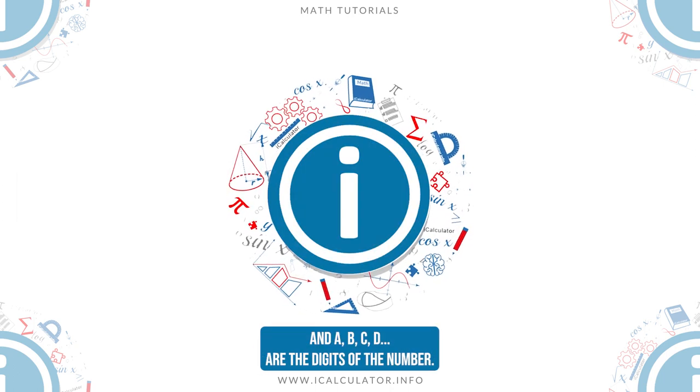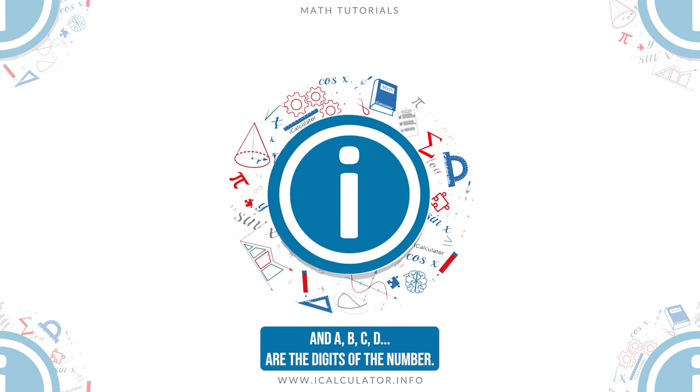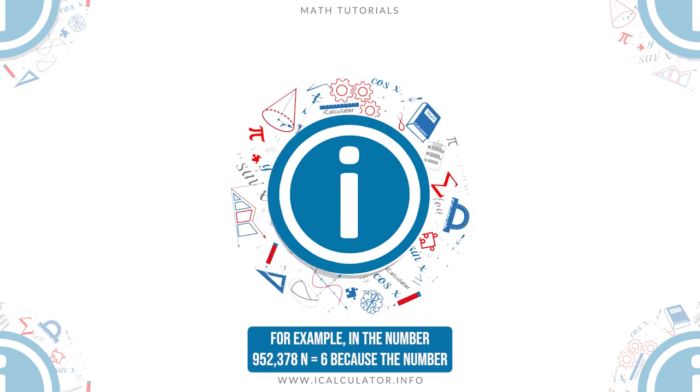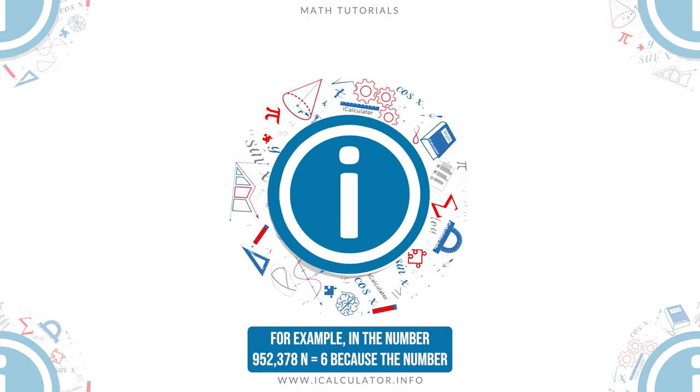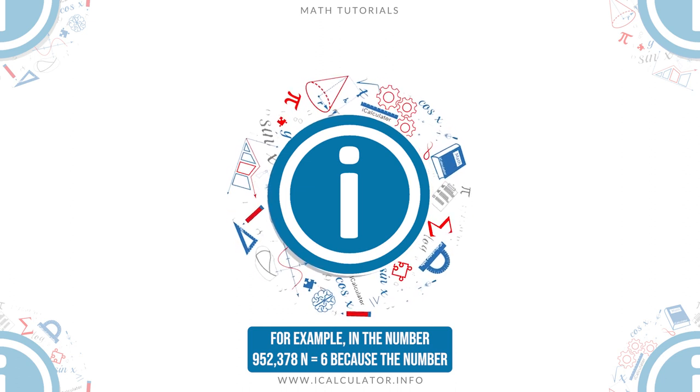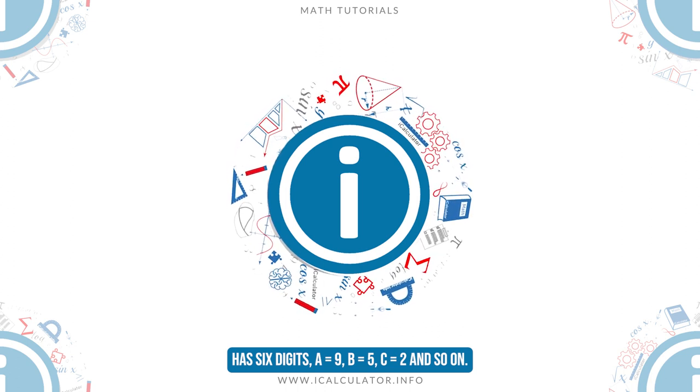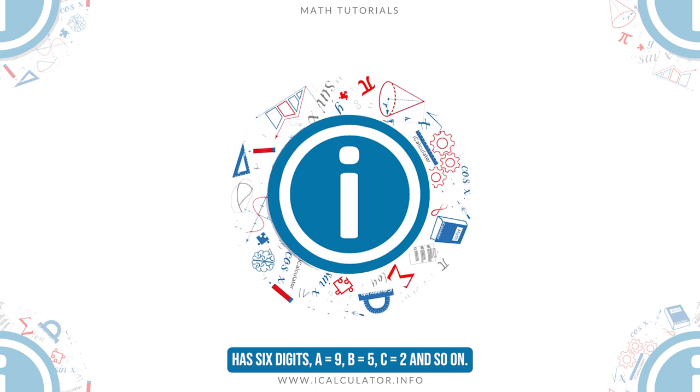Where n is the number of digits and a, b, c, d are the digits of the number. For example, in the number 952378, n equals 6 because the number has 6 digits, a equals 9, b equals 5, c equals 2, and so on.